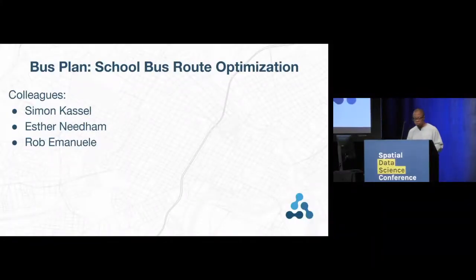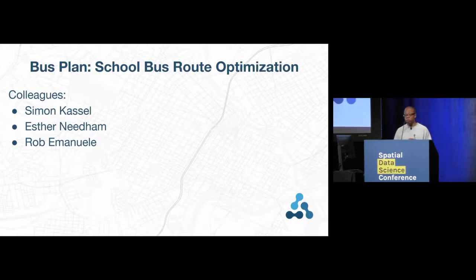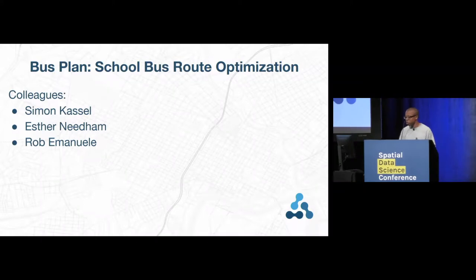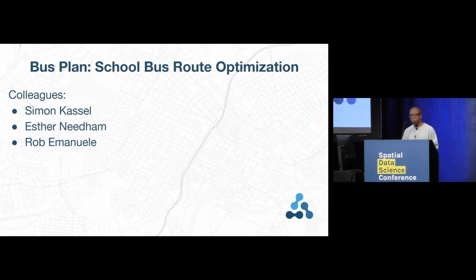I'm James McLean from Xavia. I'm on the R&D team there, and I work on a variety of projects, but I'd like to talk about this particular one. I just want to say that this bus optimization project that we worked on is somewhat similar in concept to the work you just heard about from Datakind — it concerns optimizing school bus routes. Before I proceed, I want to acknowledge three of my colleagues who worked on this project also: Simon, who did a lot of the data-related stuff; Esther was the project manager; and Rob oversees research activities at Xavia.